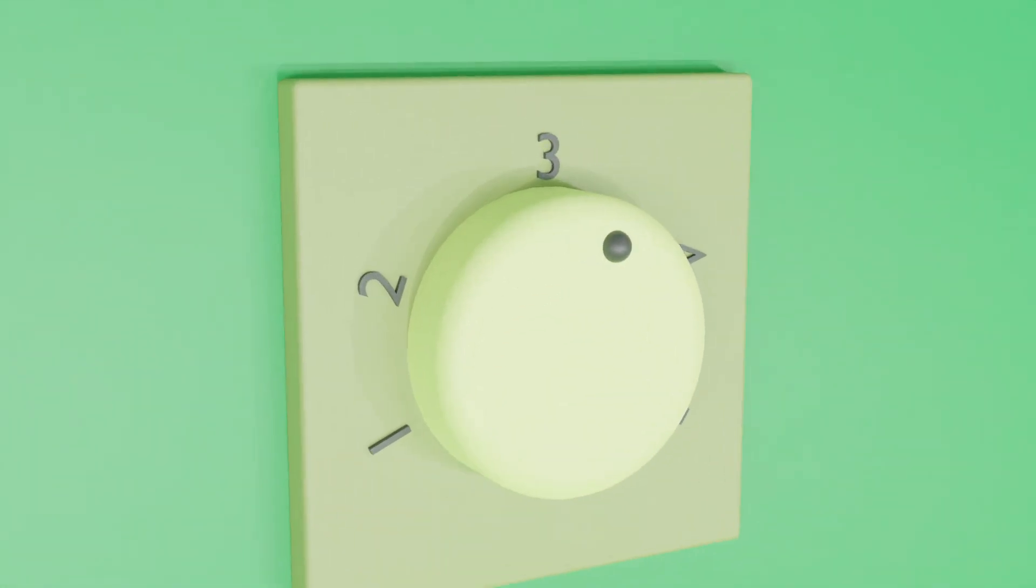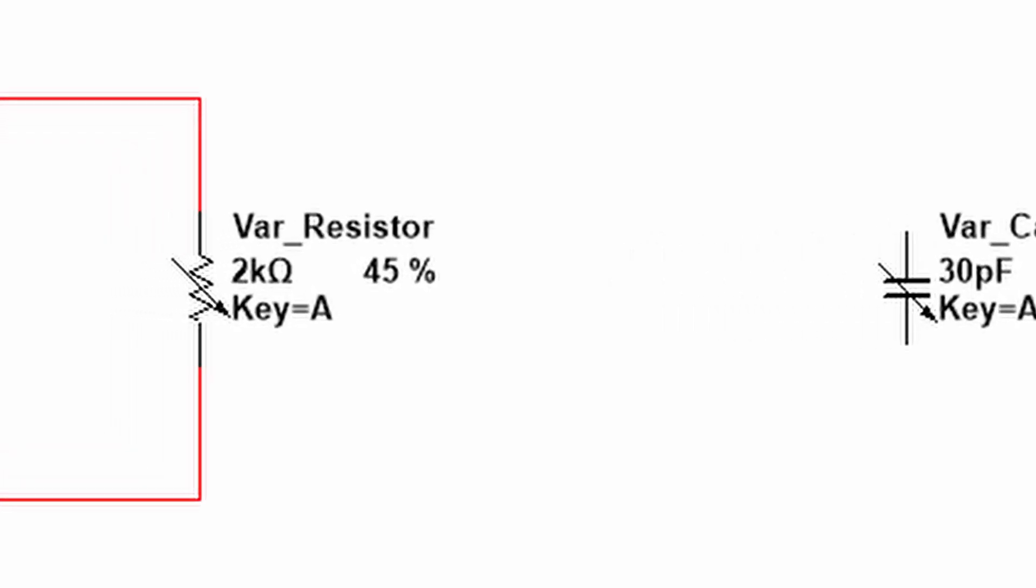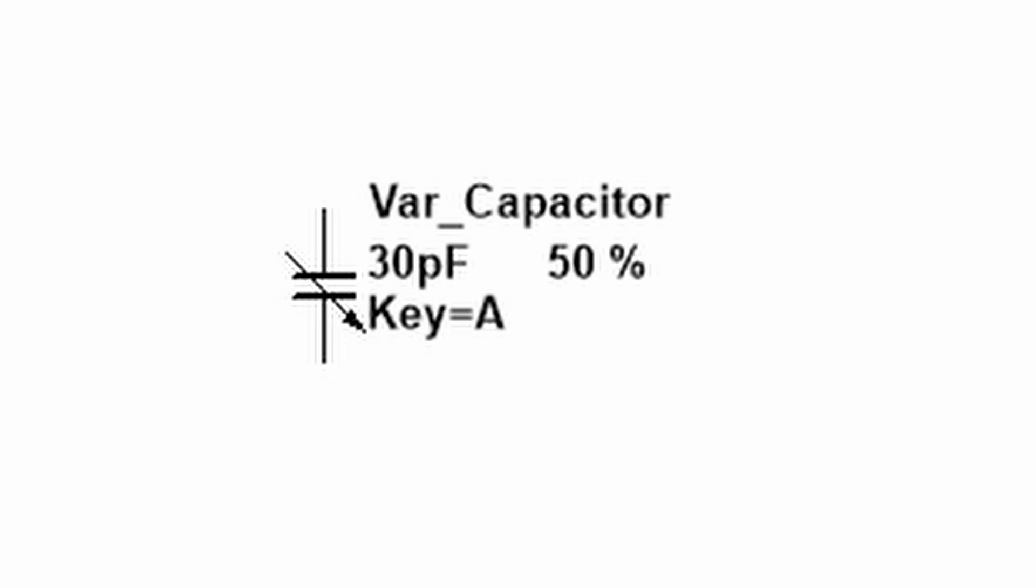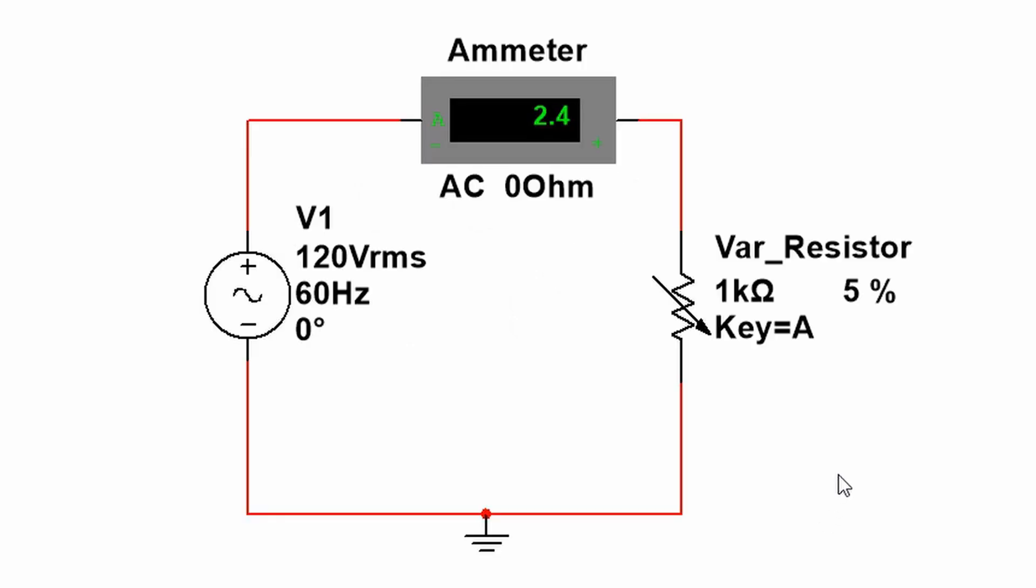The other way of controlling the fan speed, which is old style but common, is the use of a rotating knob. This rotating knob is mostly stepwise and there are two types: either a variable resistor or variable capacitor. Increasing resistance or capacitance leads to increasing impedance, or opposition to the flow of AC current in the circuit. That way, you're able to vary the speed of the fan.